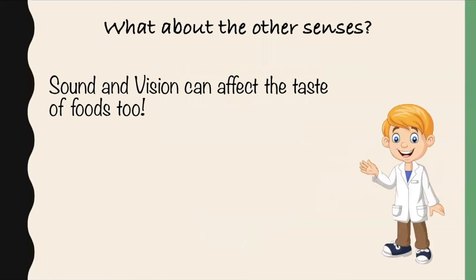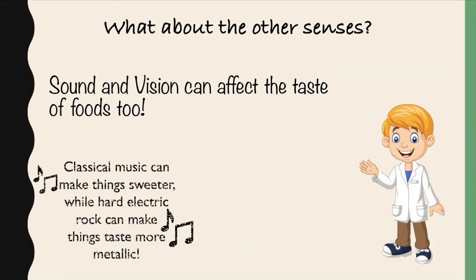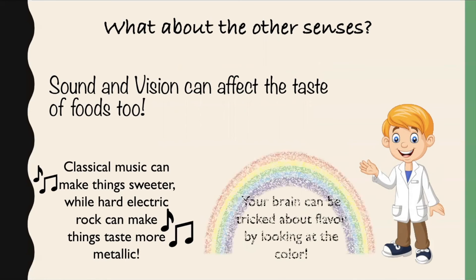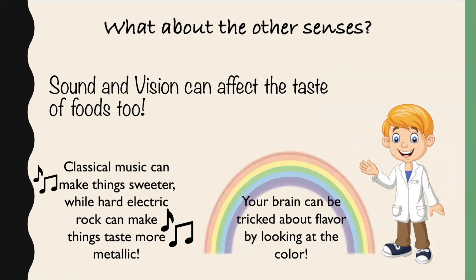So, what about the other senses? Sound and vision can affect taste, too. Classical music can make things sweeter, while hard electric rock can make things taste more metallic. Also, your brain can be tricked about the flavor just by looking at the color of the food.